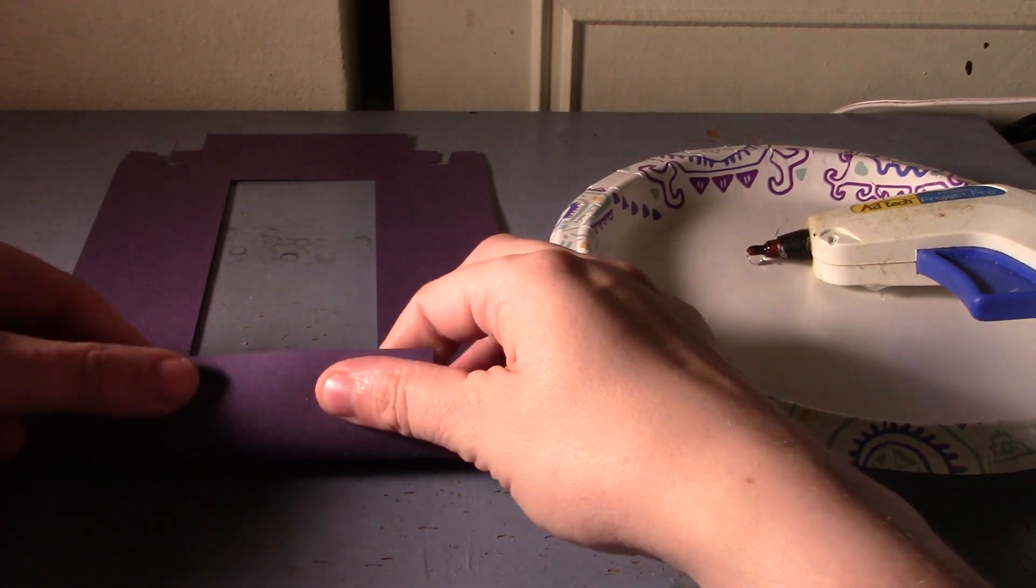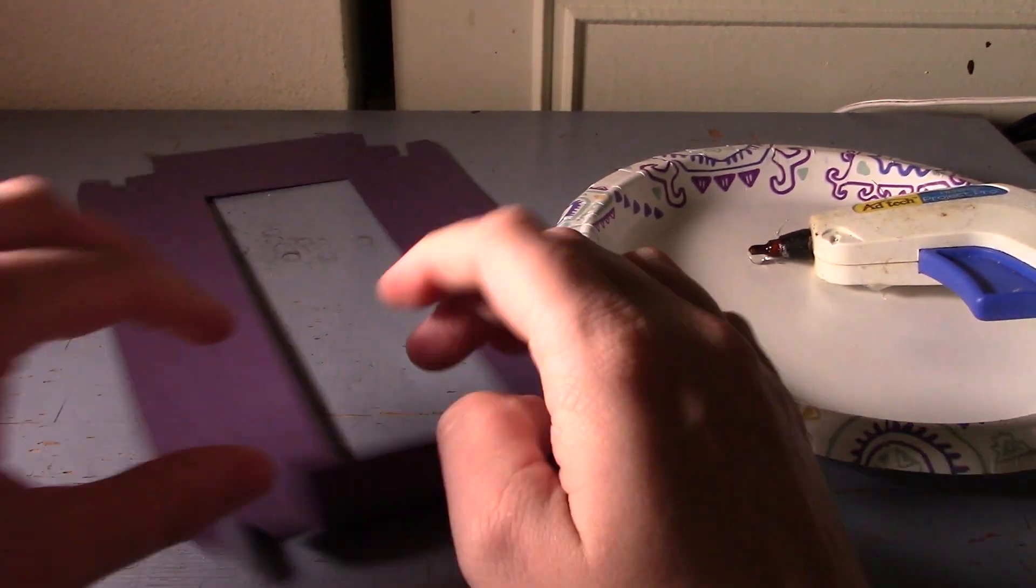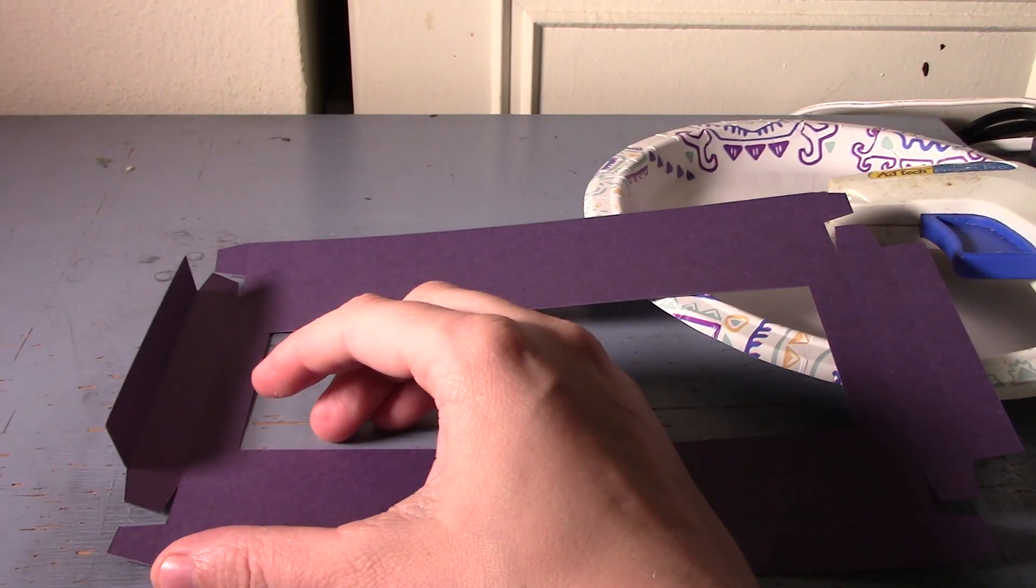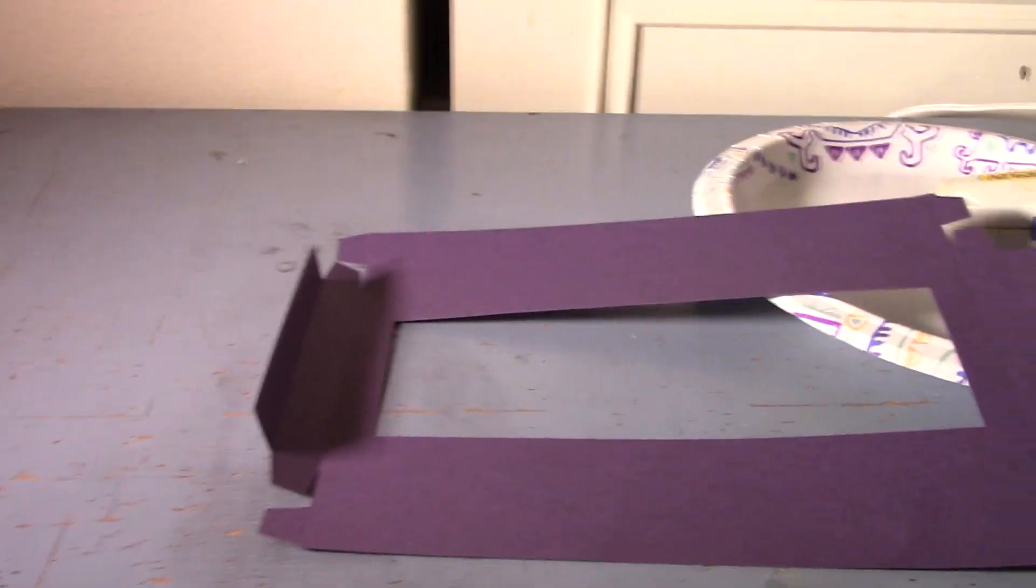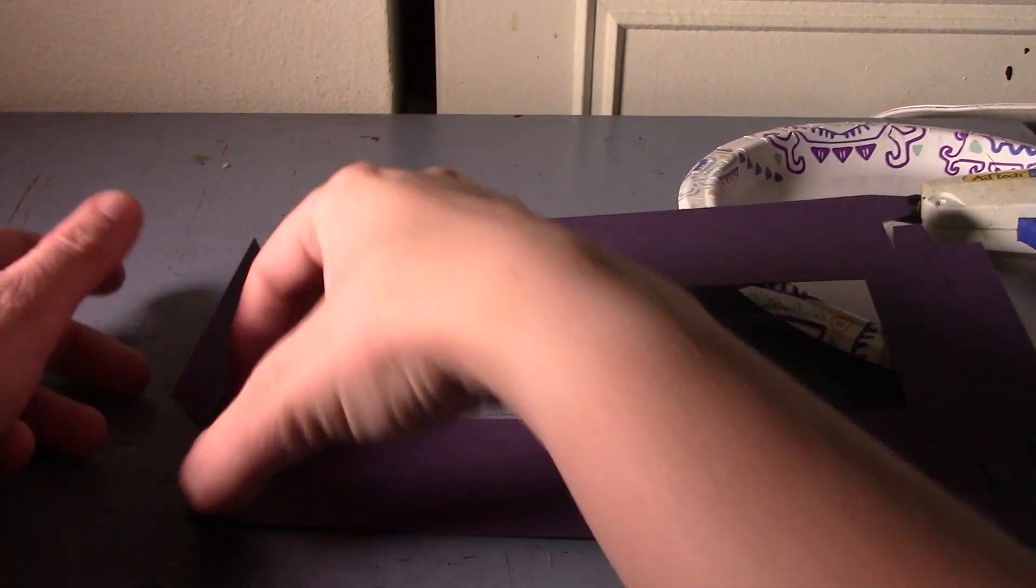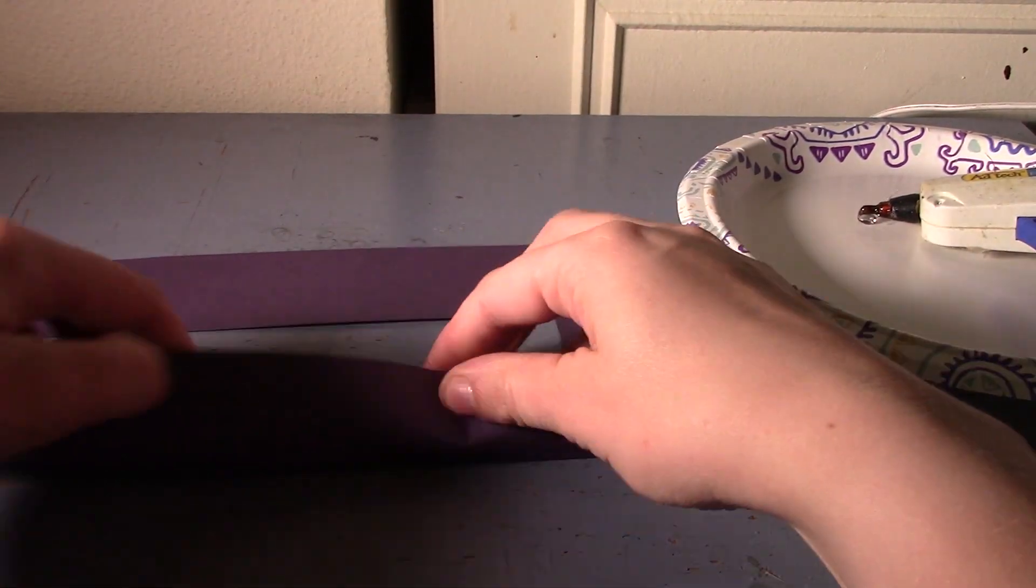So that's where you're actually going to fold. What I like to do is I always like to start on one end and fold it in. And you're just going to do this all the way around, fold it all the way around with where the creases are that your scoring wheel created.